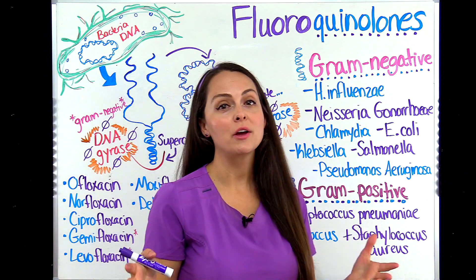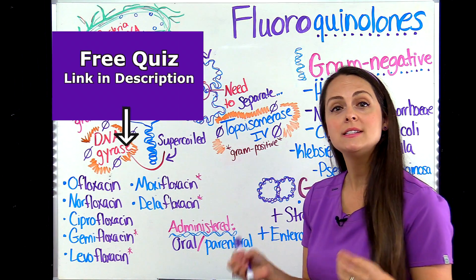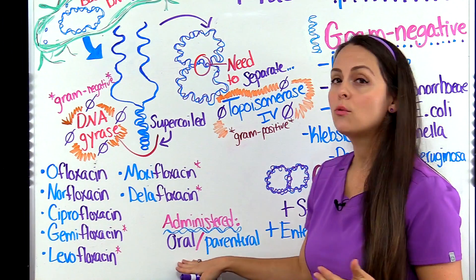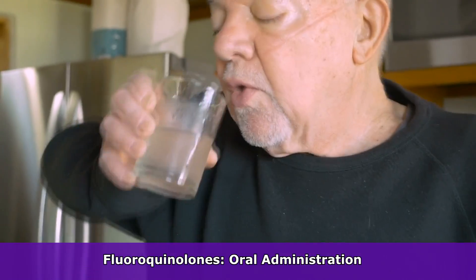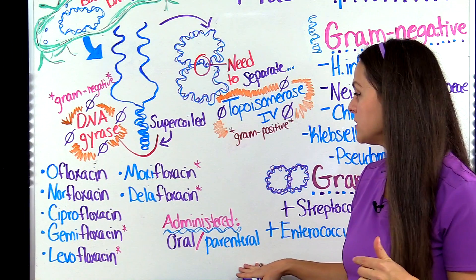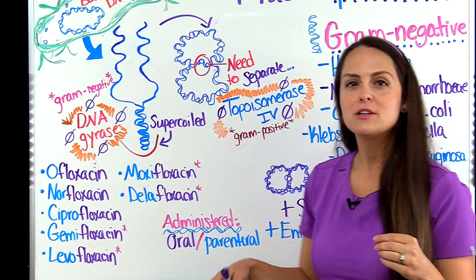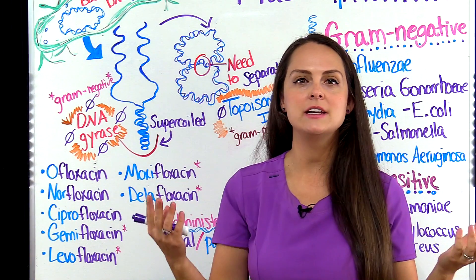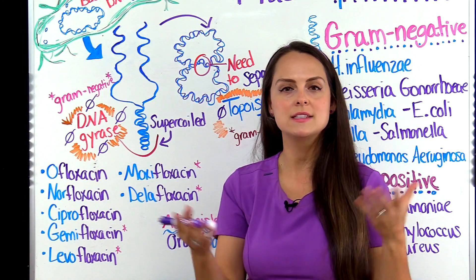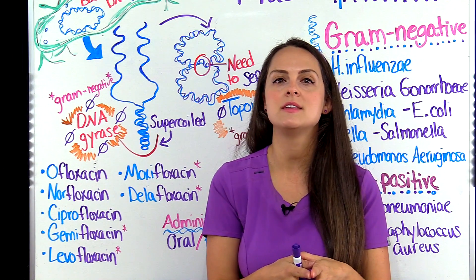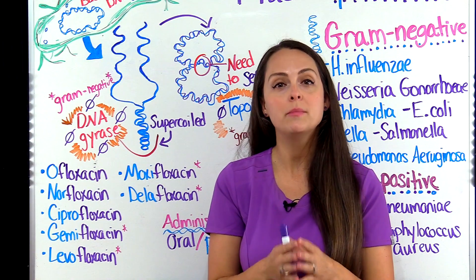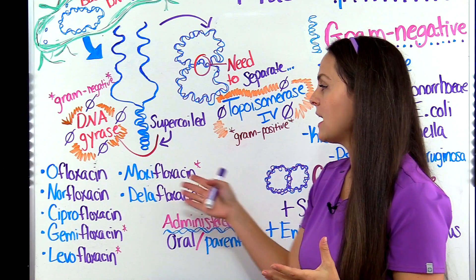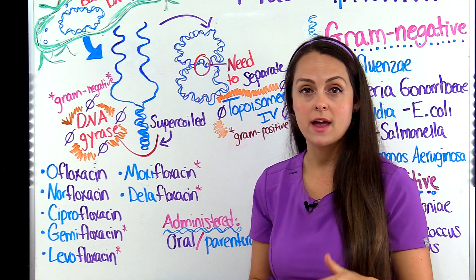Now let's talk about how quinolones are administered and how you can identify if your patient is taking a quinolone. Typically these medications are given orally because they're absorbed very well in the gut, but we can also give them parenterally if we need to. For identification purposes, remember the word floxacin — that is what you're going to find in the generic name of this group of antibiotics.